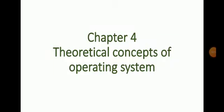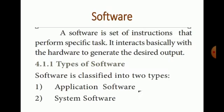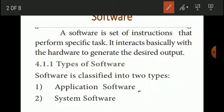Dear students, now we see Chapter 4: Theoretical Concepts of Operating System. First of all, we want to know what do you mean by software. Software is a set of instructions that perform specific tasks. There are two kinds of software: application software and system software.